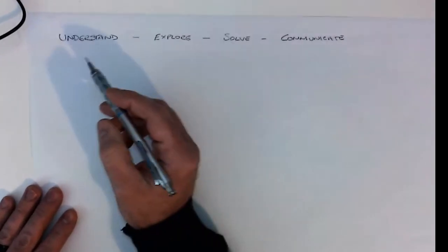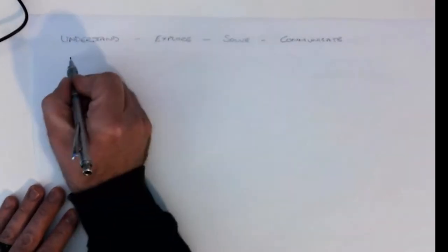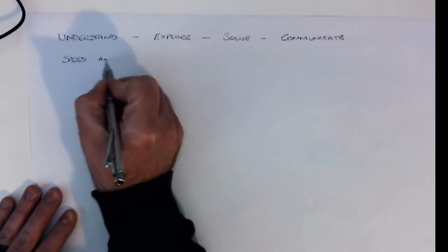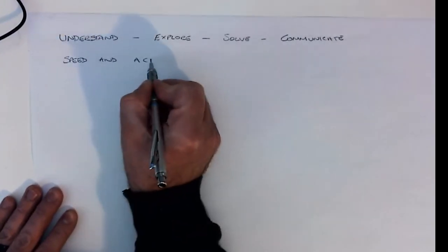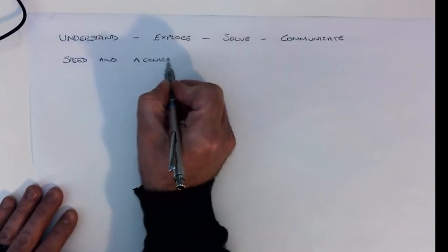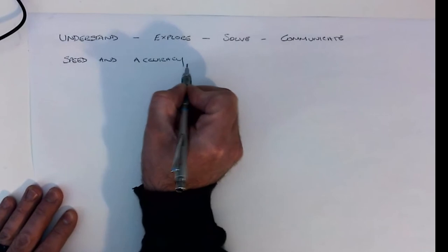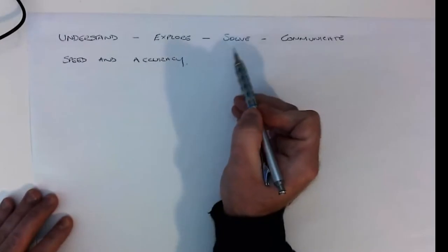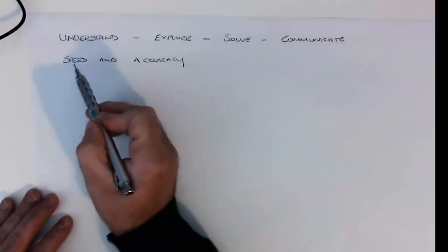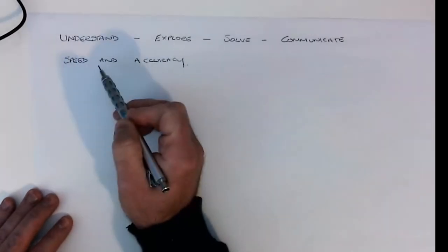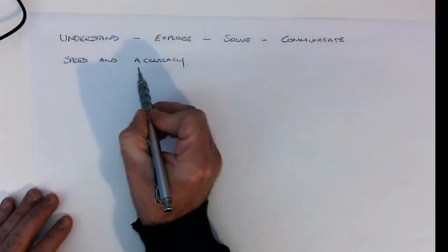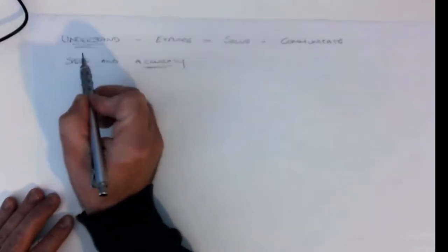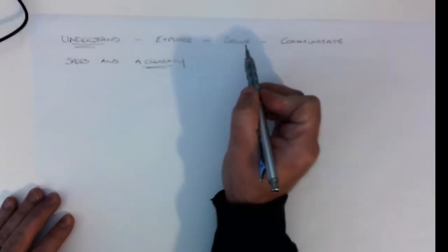The other thing we try to get is speed and accuracy. These are all signs of a really good designer, especially if you can get speed and accuracy going. Today what we're going to be looking at is accuracy and understanding — the rest will follow on from us.